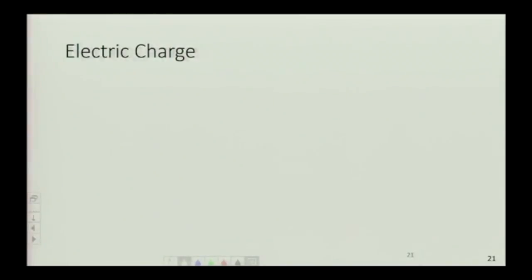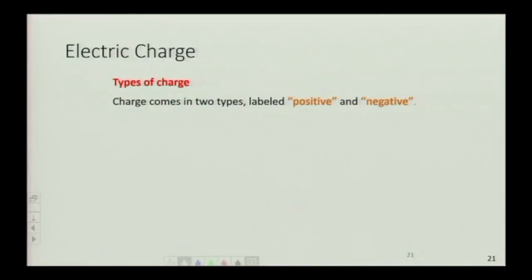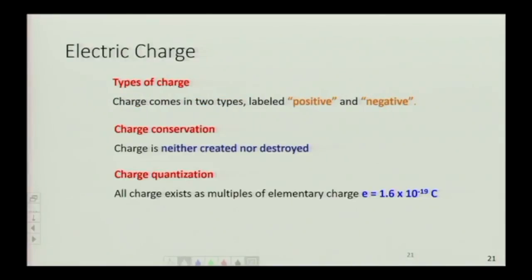The first thing we talked about in electromagnetism was that there is charge. There are two types of charge, which we call arbitrarily positive and negative. The main things to remember about charge: charge is conserved — it's neither created nor destroyed. It's also quantized, which means it comes in integer multiples of a basic unit of charge, which is the charge of an electron or a proton. That elementary charge is 1.6 times 10 to the negative 19 Coulombs, where Coulomb is the SI unit of charge.